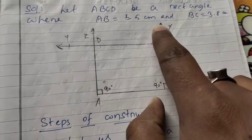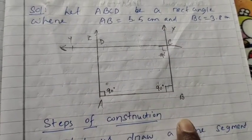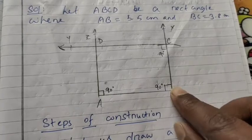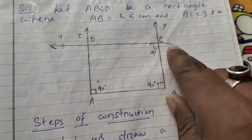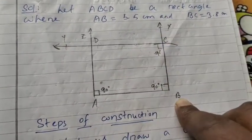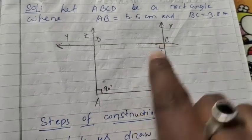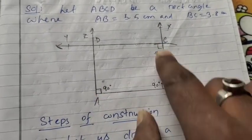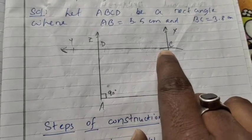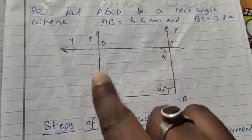Since BC is given as 3.8 cm, take point B as center and draw an arc of radius 3.8 cm. That arc will cut the ray BX at the point C. So now we have points A, B, and C.